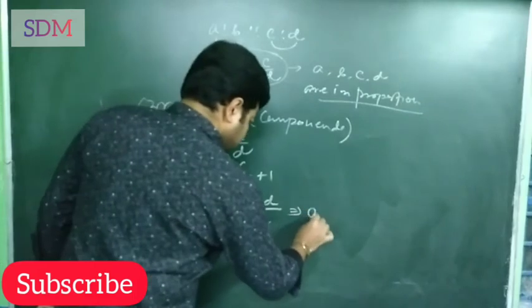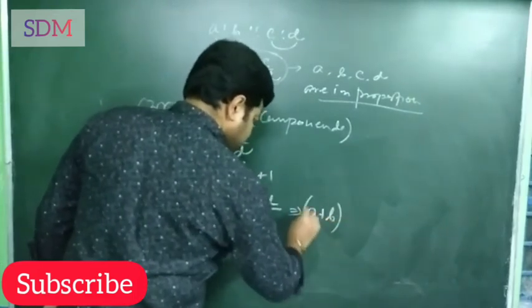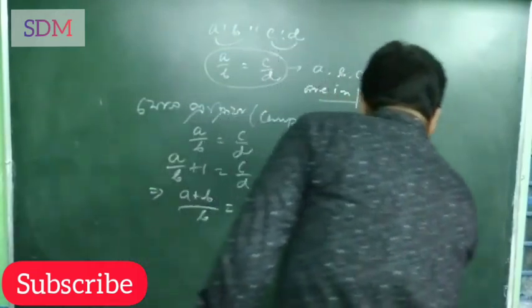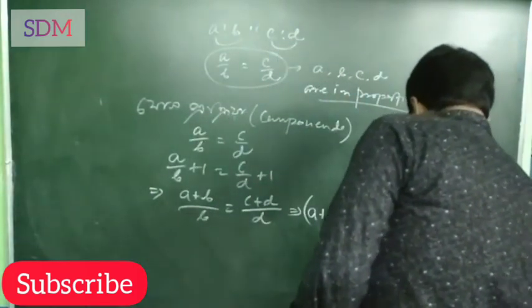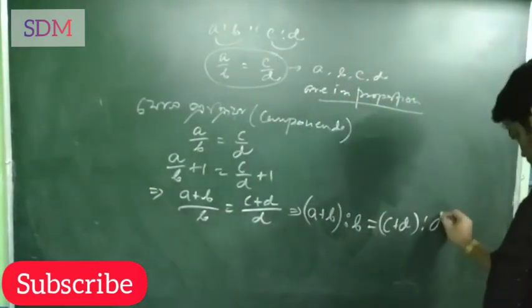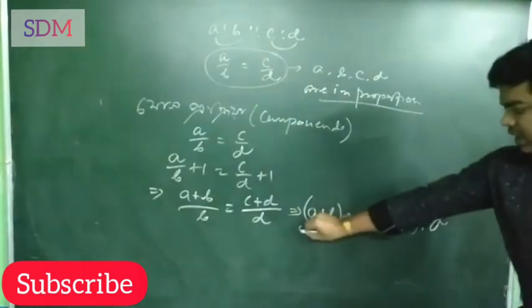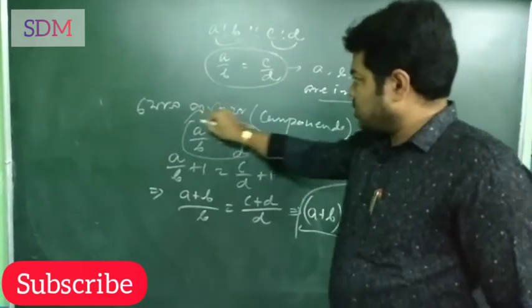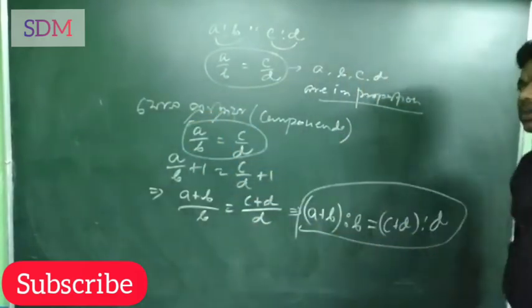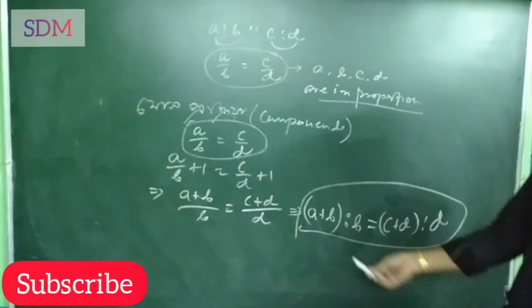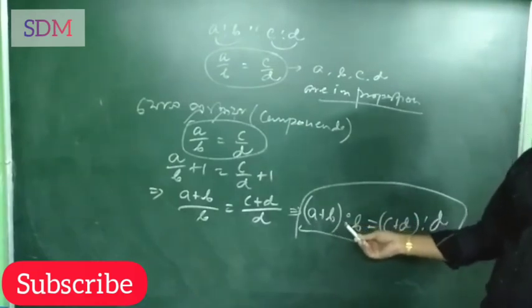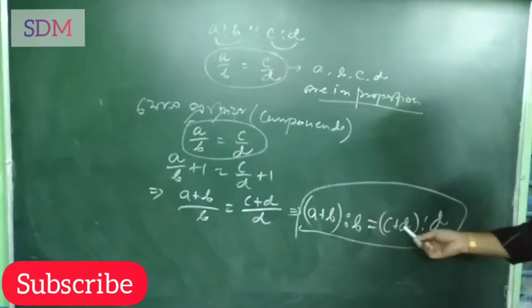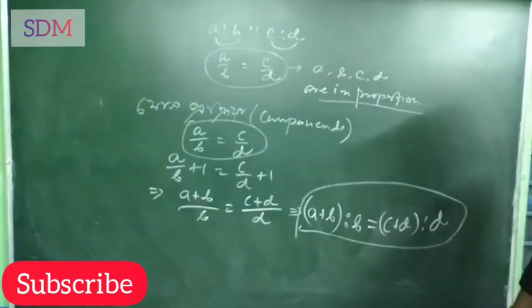So, A plus B by B equal to C plus D by D. That is, A plus B is to B equal to C plus D is to D. Therefore, ratio A by B equal to C by D. That is, A is to B equal to C is to D. Second part, numerator plus denominator is to denominator. Clear, clear.